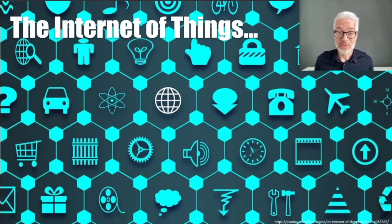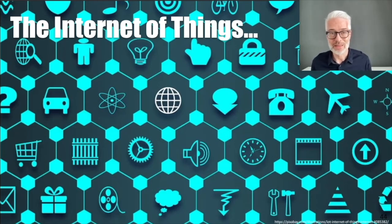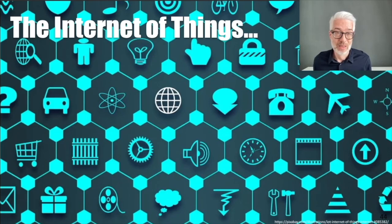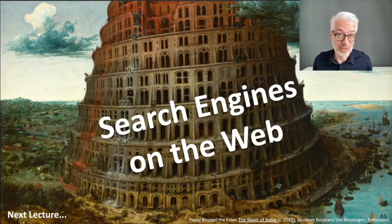Every household device — for example, every refrigerator — will soon be connected to the internet, producing data and flooding it with things like grocery lists. Somebody has to write a Hitchhiker's Guide to the Web, but it's probably already too late for that. How do we get along without it? Of course, we have something to find information on the internet: search engines — which are the topic of the next section of this lecture.